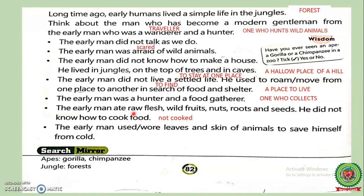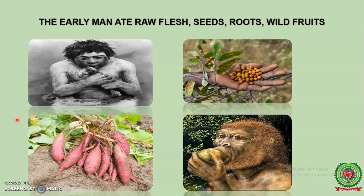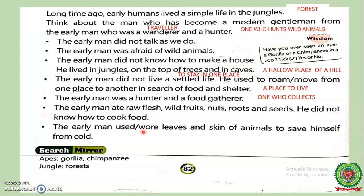The early man ate raw flesh, wild fruits, nuts, roots, and seeds. He did not know how to cook food. Underline 'raw' — its meaning is 'not cooked.' The early man also wore leaves and skin of animals to save himself from cold.